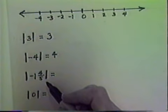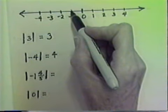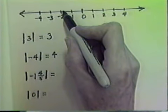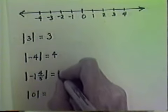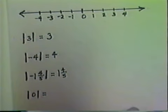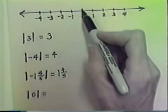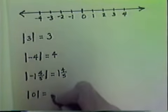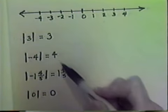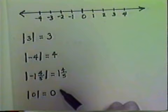The absolute value of negative one and four-fifths: here's negative one — negative one and four-fifths would be closer to two, and the distance from zero to negative one and four-fifths is one and four-fifths units. The absolute value of negative one and four-fifths is one and four-fifths. And then our special case: the absolute value of zero. The distance from zero to zero on the number line is zero. Notice that in each case the absolute value came out to be a positive number, or zero itself in the special case.